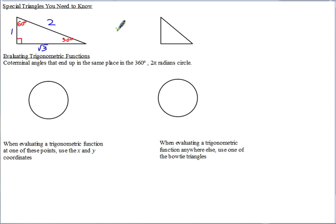Recall, for radians — and we'll primarily be working in radians — 30 degrees is the same as pi over 6, and 60 degrees is the same as pi over 3. The easy way to remember that: 60 degrees is twice as much as 30 degrees, and if you multiply 2 times pi over 6, you get 2 pi over 6, which reduces to pi over 3.